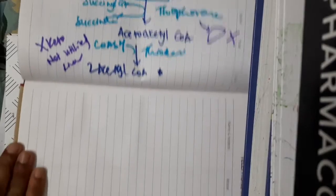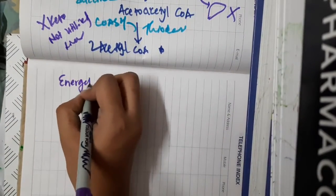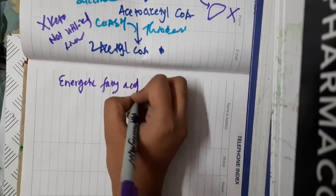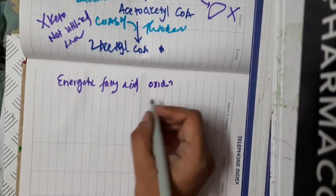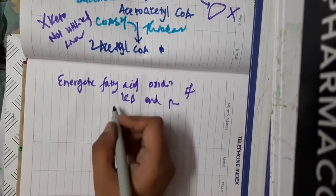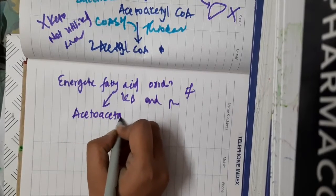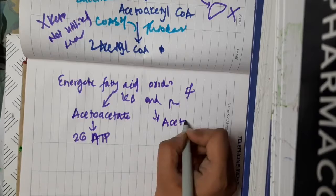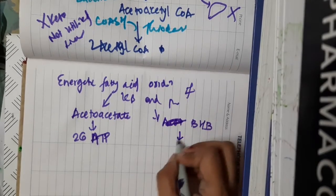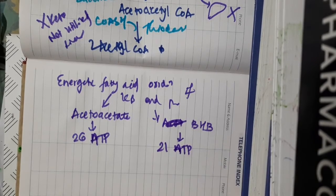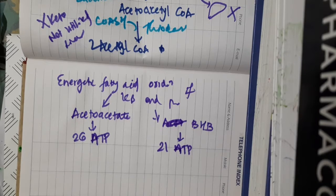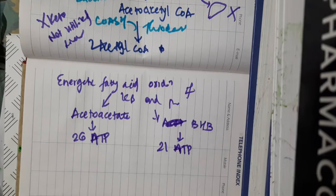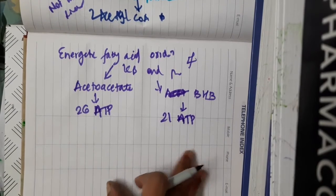Regarding the energetics of fatty acid oxidation when ketone bodies are the end products: if acetoacetate is the end product, it produces 26 moles of ATP. If beta-hydroxybutyrate is the end product, then it produces 21 moles of ATP.